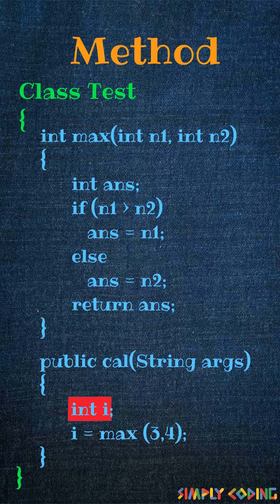In our next video, we will learn more about the difference between formal parameters and actual parameters, and also learn about different types of variables such as global, instance, class, and more.